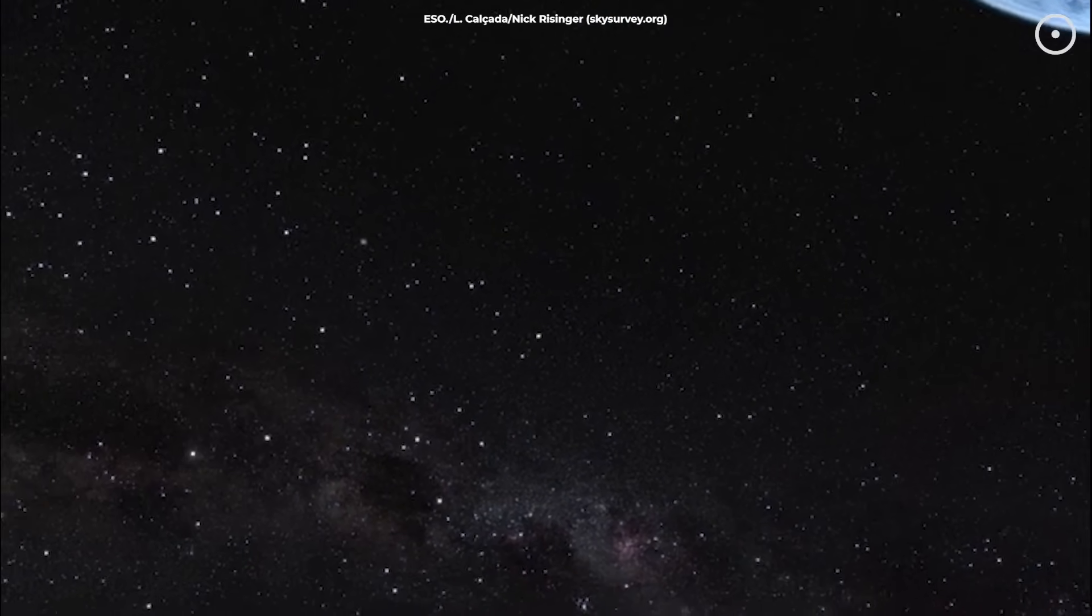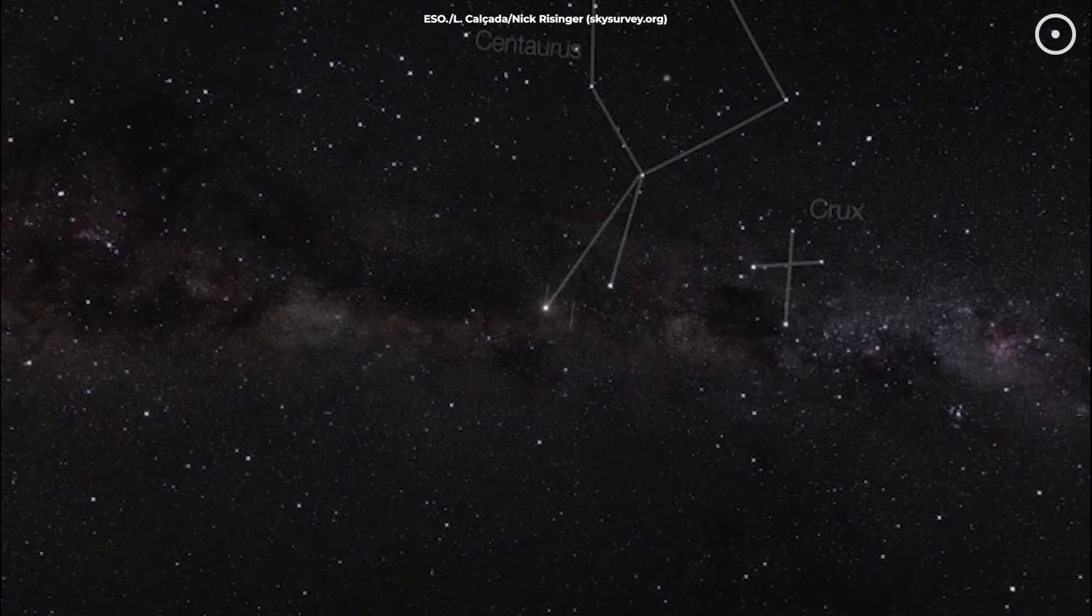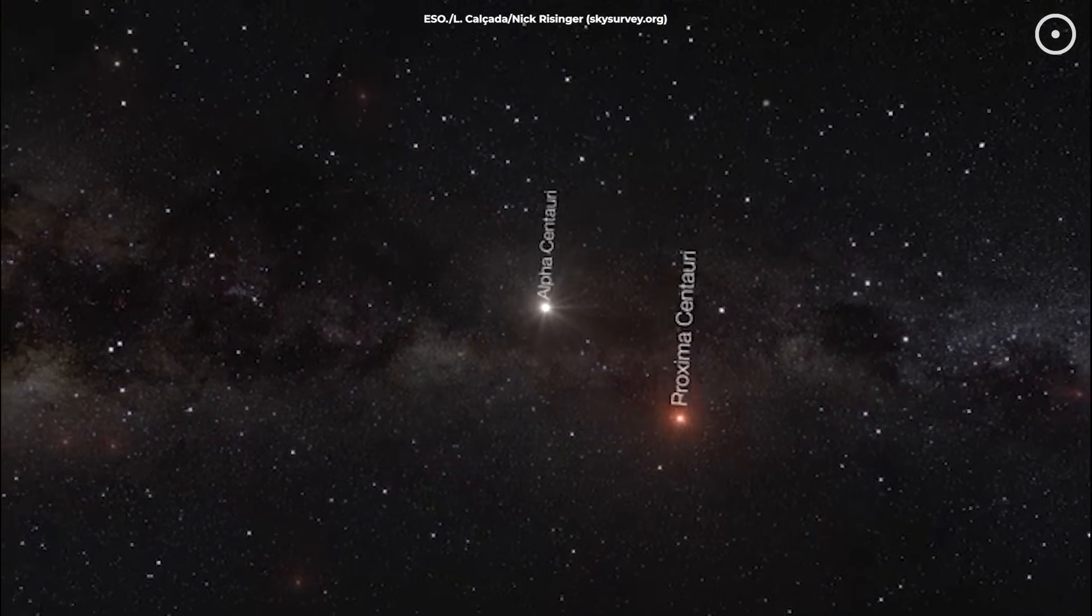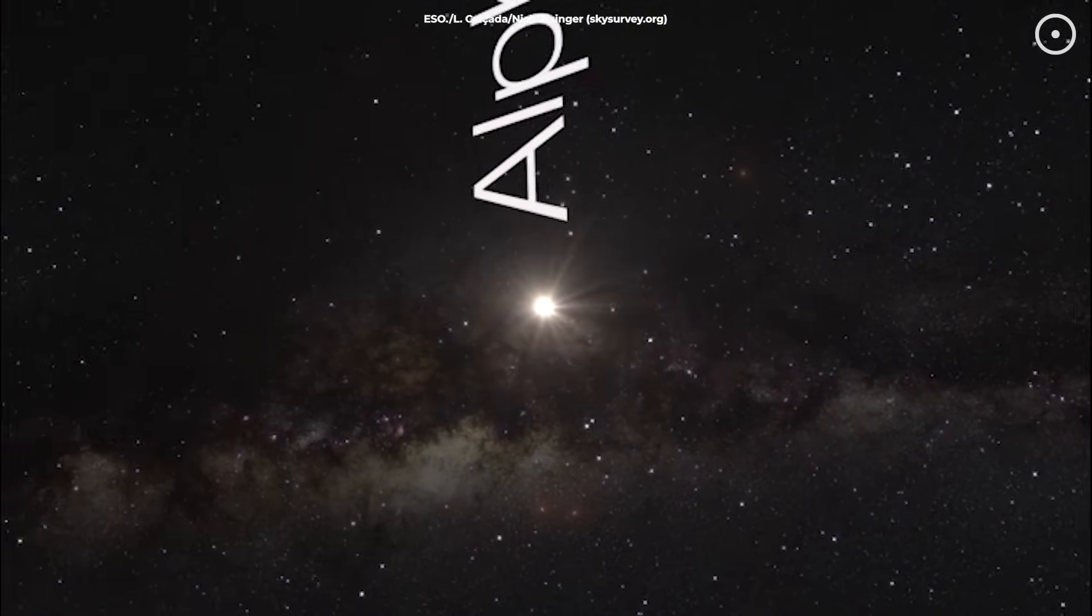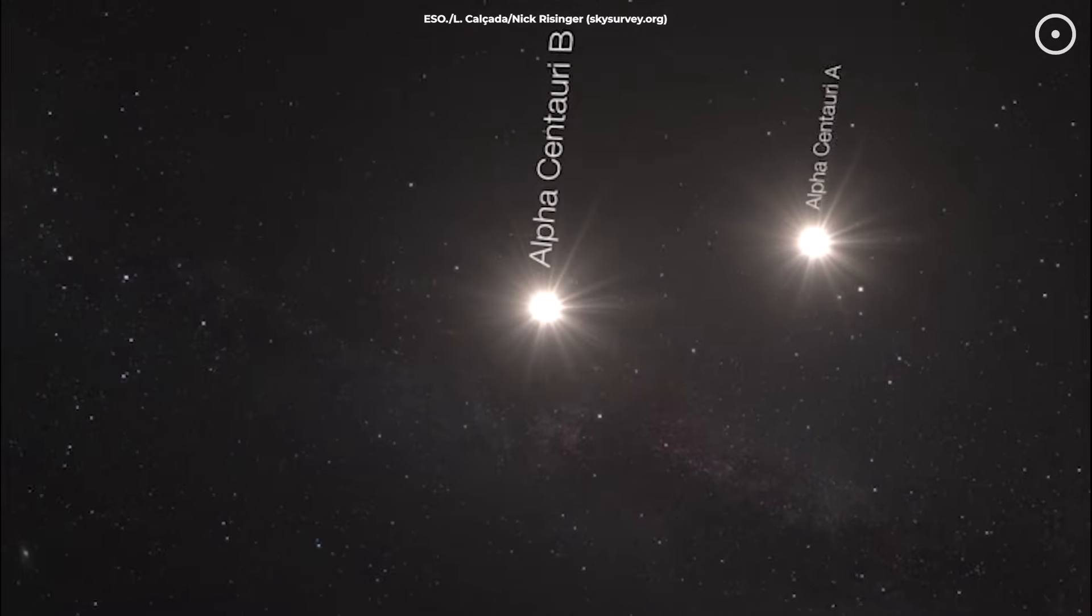Take Alpha Centauri, our closest stellar neighbor. What looks like a single point of light is actually three stars dancing around each other in an endless cosmic ballet.